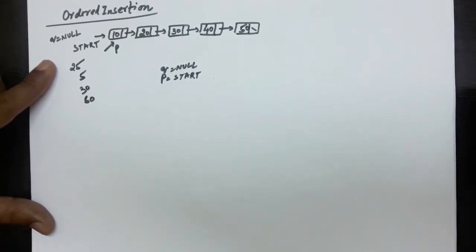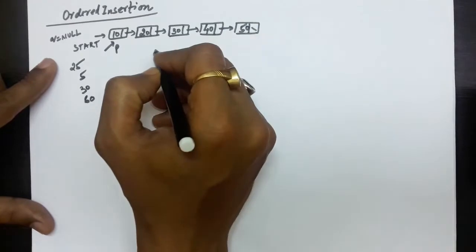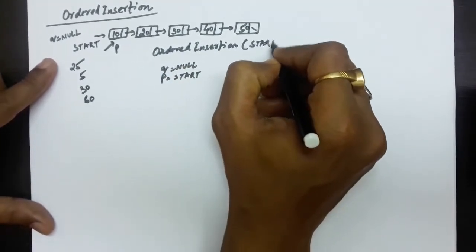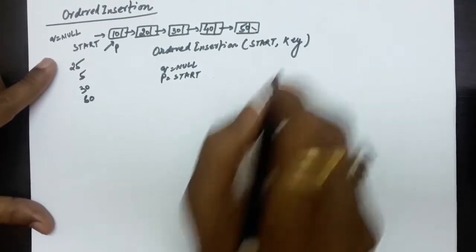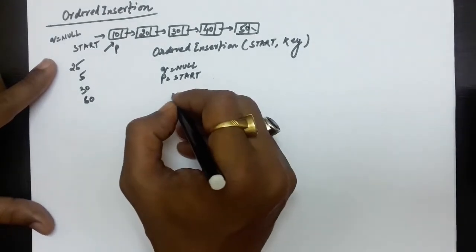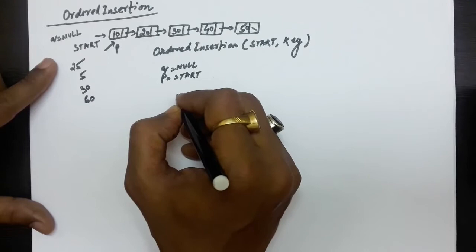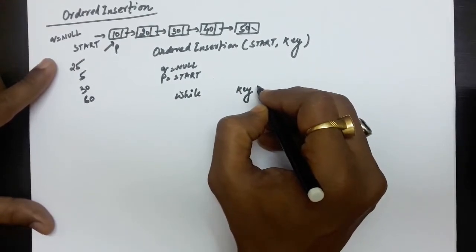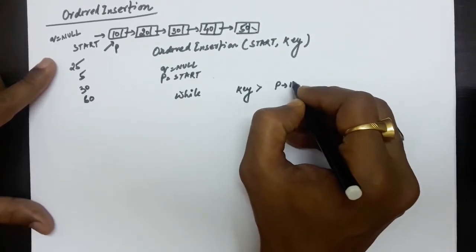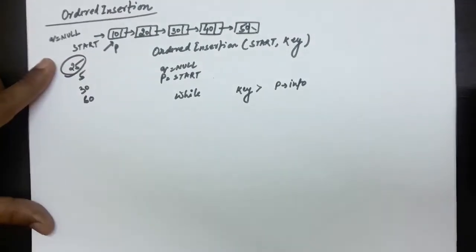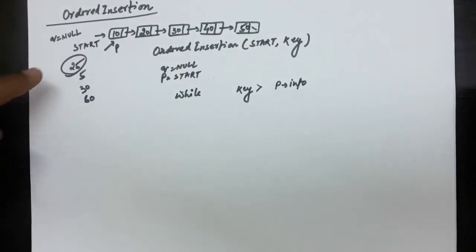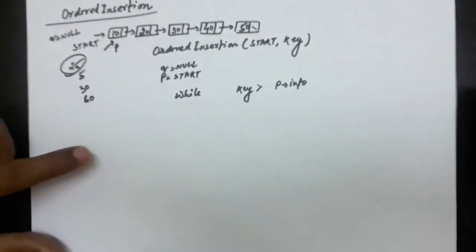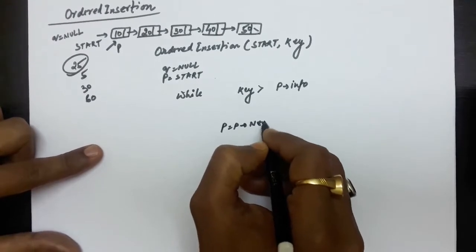We will traverse the linked list to find the appropriate position. The function is called ordered insertion and we are given a start and a key value to be inserted. The condition for traversal is: key is greater than the information of the P node. So P equals P dot next to advance the pointer.